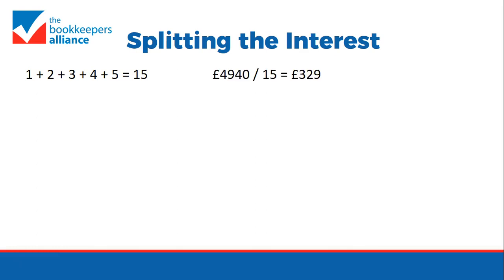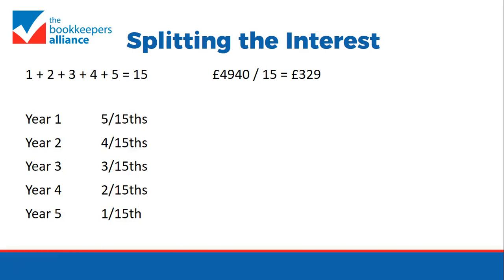We then say that the total interest divided by 15, rounded, is £329. We pile more interest into the earlier years and less into the later years. So in year one we have five-fifteenths of the interest, year two four-fifteenths, year three three-fifteenths, and so on.